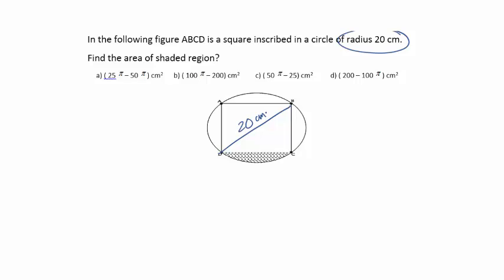Now it's asking you what is the area of the shaded region. As we know a square whose diagonal is 20, we can find out the side of the square. Let's say this is a and this is a, so we know that a squared plus a squared equals 20 squared.